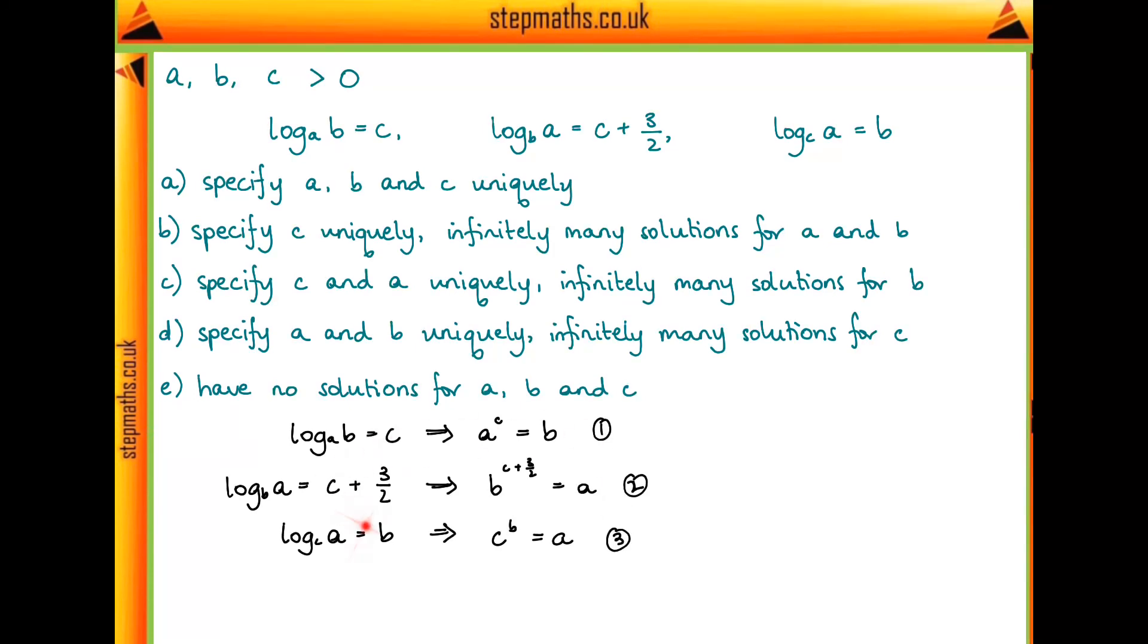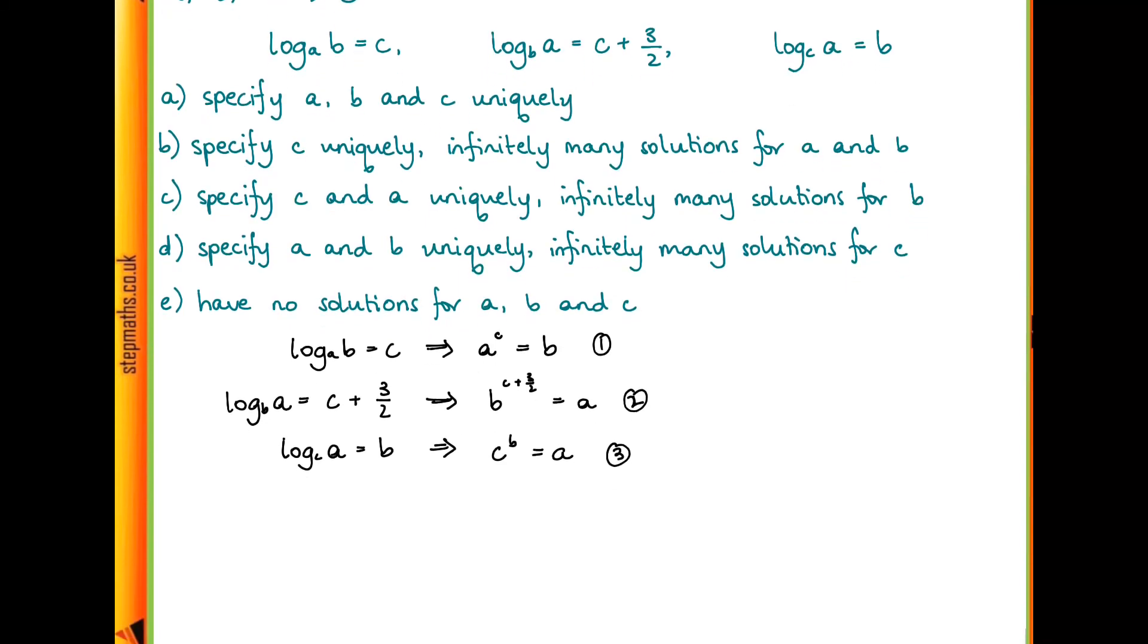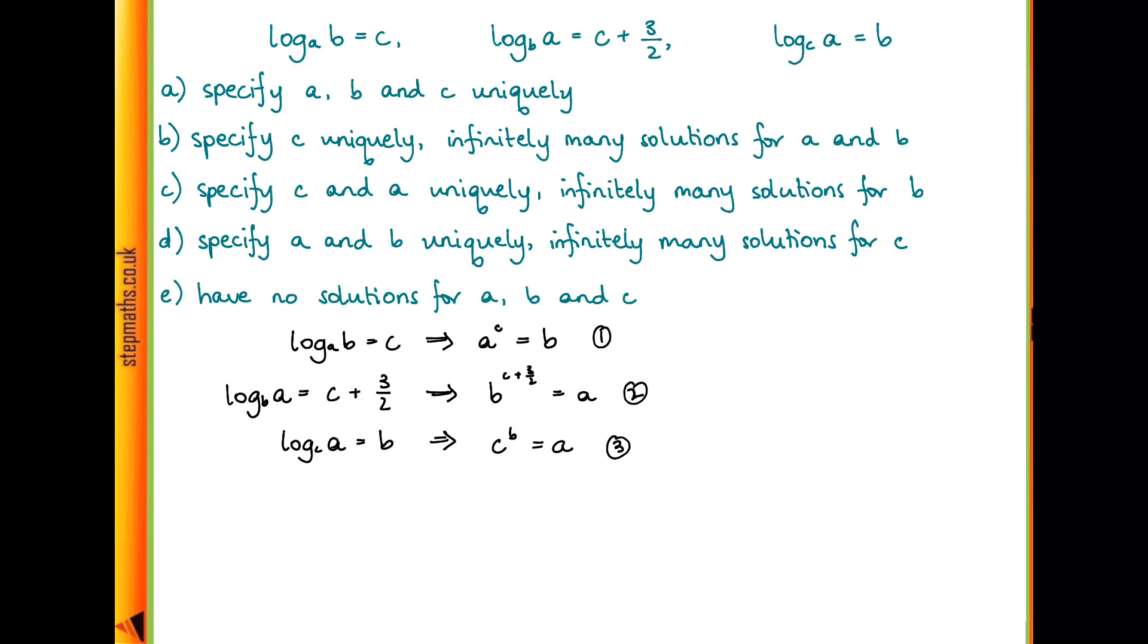We've got to try to solve these equations and see if we can get unique or infinitely many or no solutions for a, b, and c. Each of these equations involve all of a, b, and c. So we might want to do some substituting or eliminating to get equations in terms of just two of those. The easiest one to eliminate is probably a, because we've got 2 and 3 where we've got a in terms of something else.